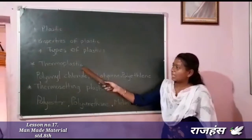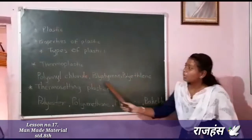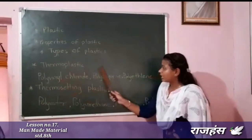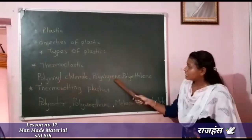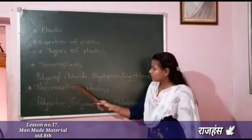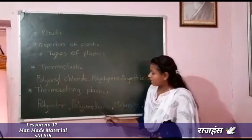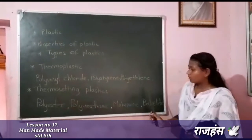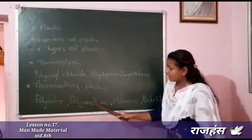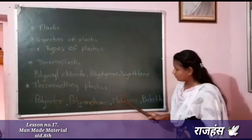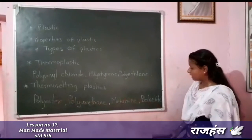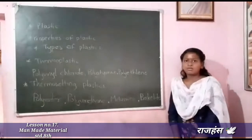In thermoplastic, there are different types: first, polyvinyl chloride; polystyrene; polythene. In thermosetting plastic, there are four types: first, polystyrene; second, polyurethane; third, melamine; and fourth, bakelite. Thank you.